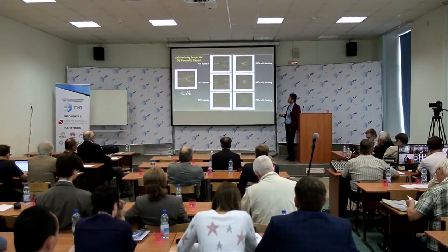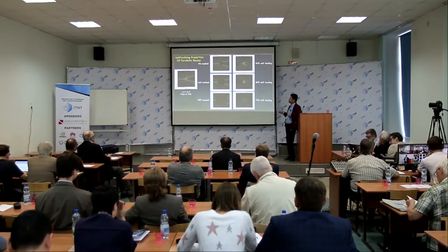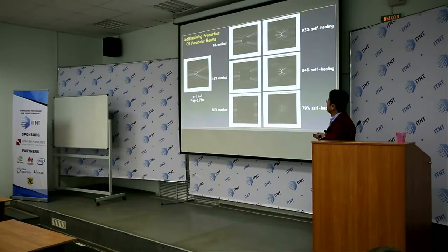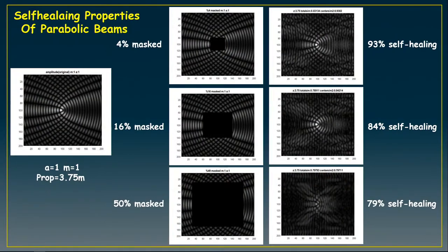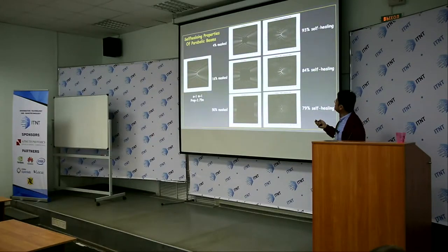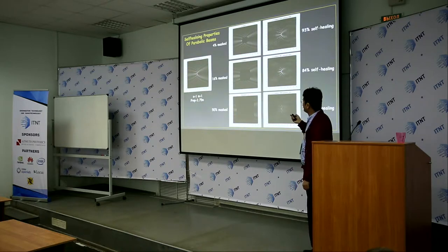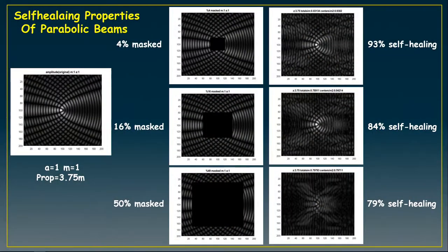The second thing we are interested in — and this is more interesting — in quantum computation and entanglement, is the self-healing properties of these non-diffracting beams. For example, by applying any defect and then propagating these types of light, we can see the self-healing properties. We quantify the self-healing properties — by propagating the light we see 93% self-healing at Z equals 84. The quantification of self-healing properties is more important.